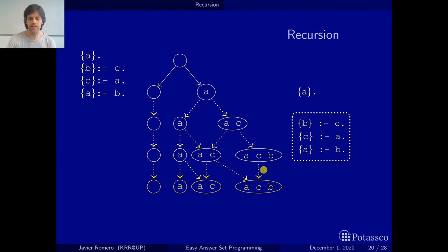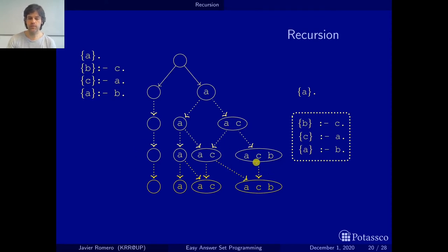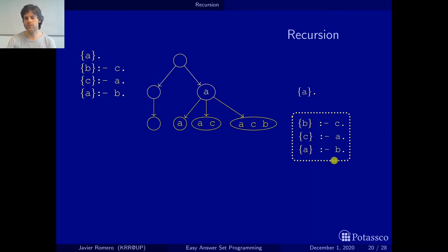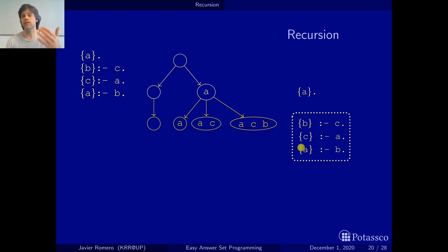If we apply the rules again, we obtain the same sets — from {A} we get those two, from {A, C} we get those two, and from {A, C, B} we get the very same set again. Since applying the rules produces the same result, it doesn't make sense to apply them anymore; we will always stay with these four sets of atoms. So the result of applying this set of recursive rules, starting from the two sets produced by the choice rule, are these four sets. We have applied the rules in order, considering the set of recursive rules as a single rule applied repeatedly until nothing changes. Since there are no more rules left to apply, these are the answer sets of this program.